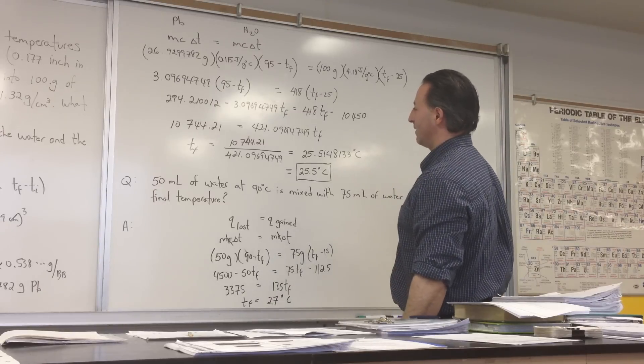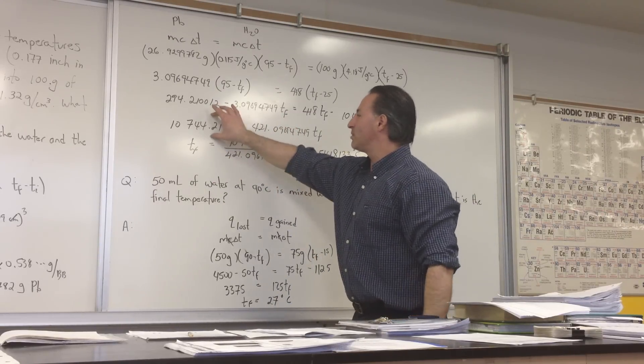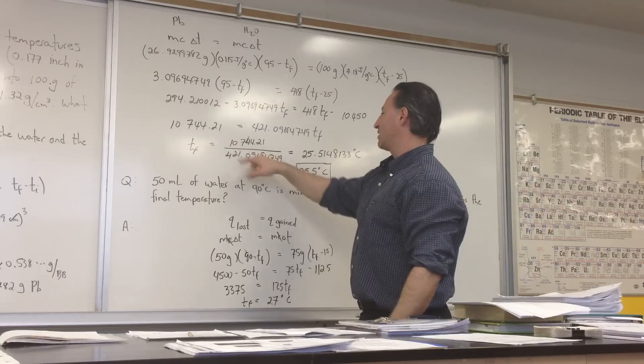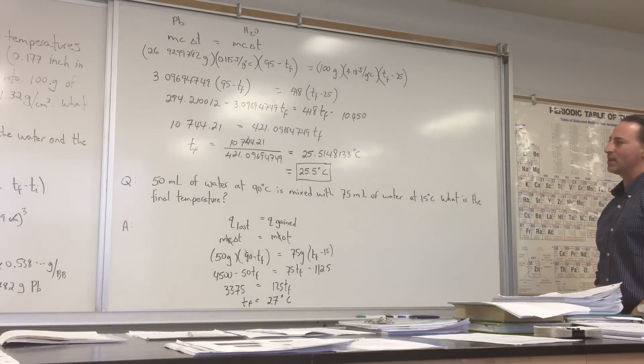TF is equal to this number divided by this number, and you're isolating for TF, and we get that the final temperature is 25.5 degrees Celsius.